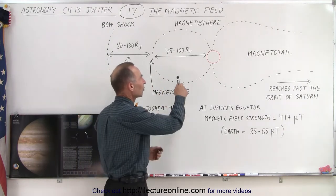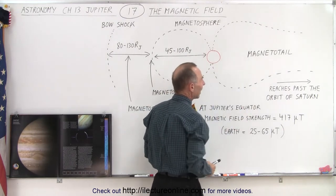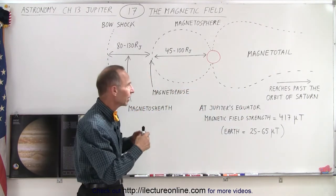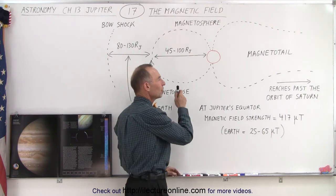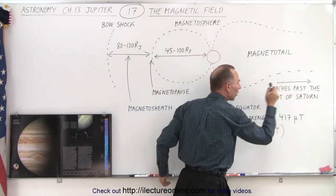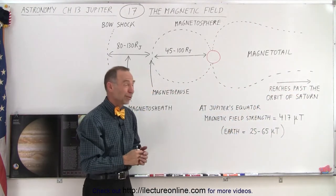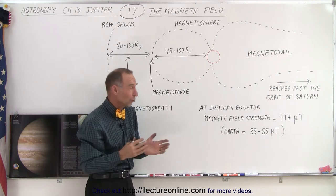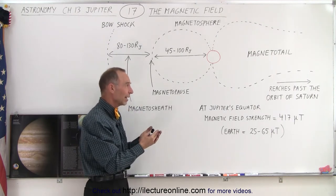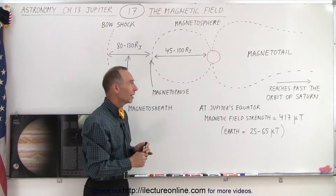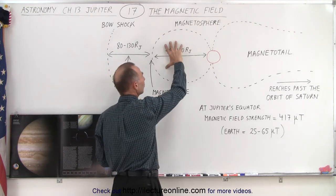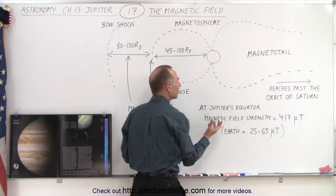Behind the magnetosphere we have a magnetotail and it's also enormously big. The magnetotail essentially reaches past the orbit of Saturn, and since Saturn is five astronomical units away, you can realize that it is an enormously long tail.